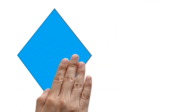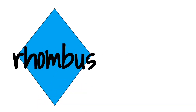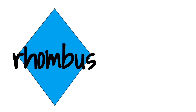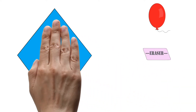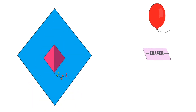This is a rhombus. Can you see an object that is shaped like a rhombus? A kite is shaped like a rhombus. Rhombus.